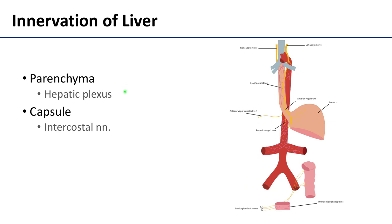The parenchyma of the liver is innervated by the hepatic plexus, which is the largest offshoot of the celiac plexus. This contains both sympathetic fibers and also, very importantly, parasympathetic fibers. Additionally, the capsule surrounding the external surface of the liver has innervation from the intercostal nerve, so there are also some somatic nerves associated with this region.